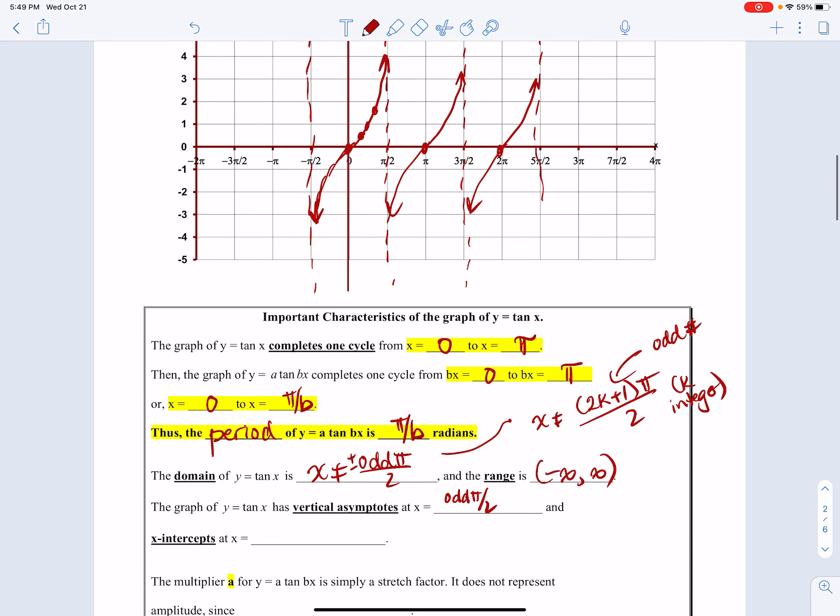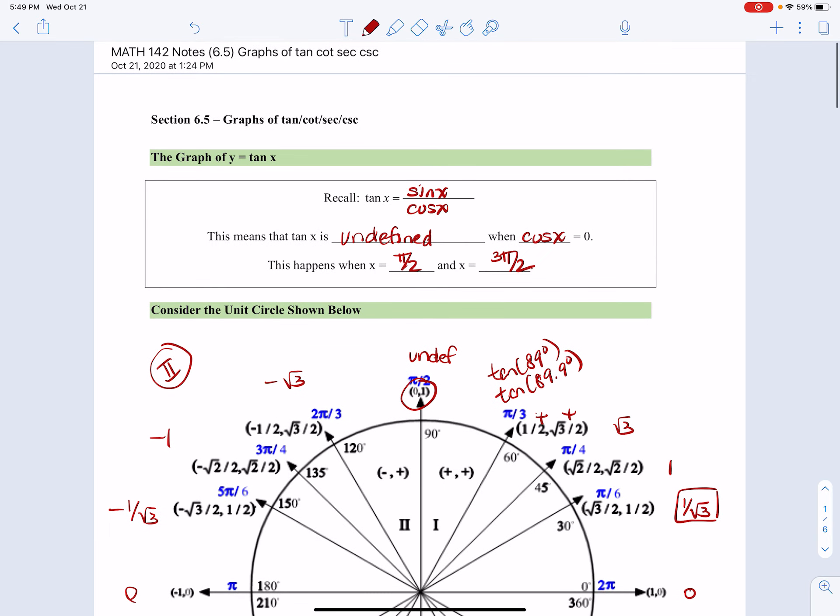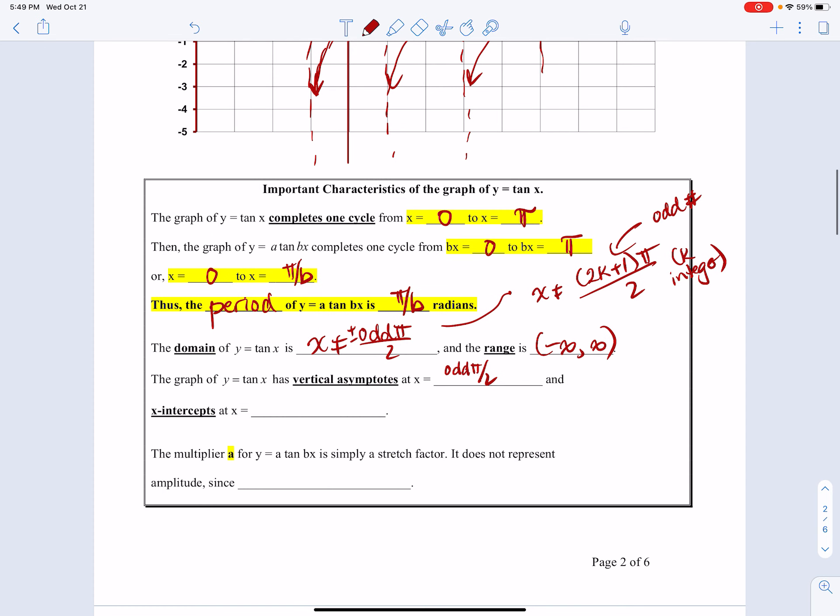Looking at the intercepts, notice the x-intercepts are the same as those of sine. Since tan(x) = sin(x)/cos(x), if the numerator equals 0, the whole thing is 0. So tangent has x-intercepts at x = 0, ±π, ±2π, et cetera, which I'll represent as x = kπ where k is an integer.